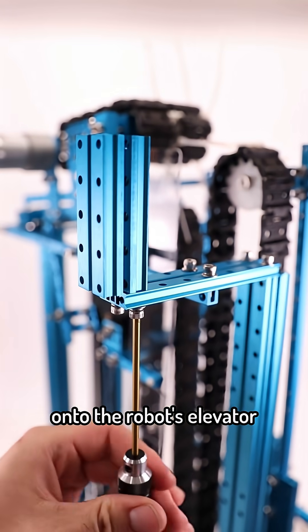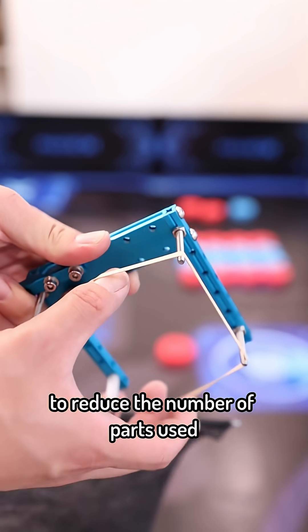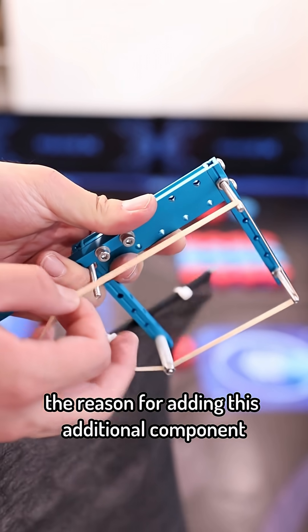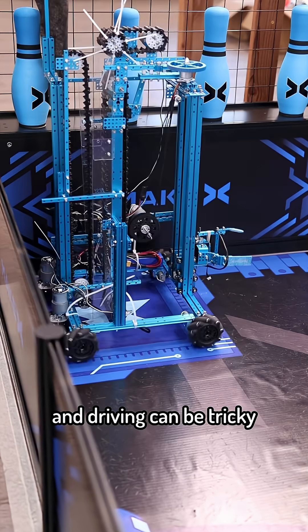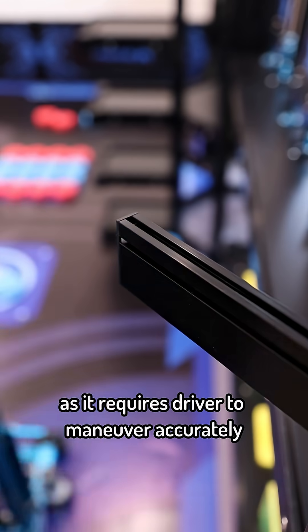We can also mount this bracket onto the robot's elevator to reduce the number of parts used. The reason for adding this additional component is simplicity, and driving can be tricky as it requires the driver to maneuver accurately.